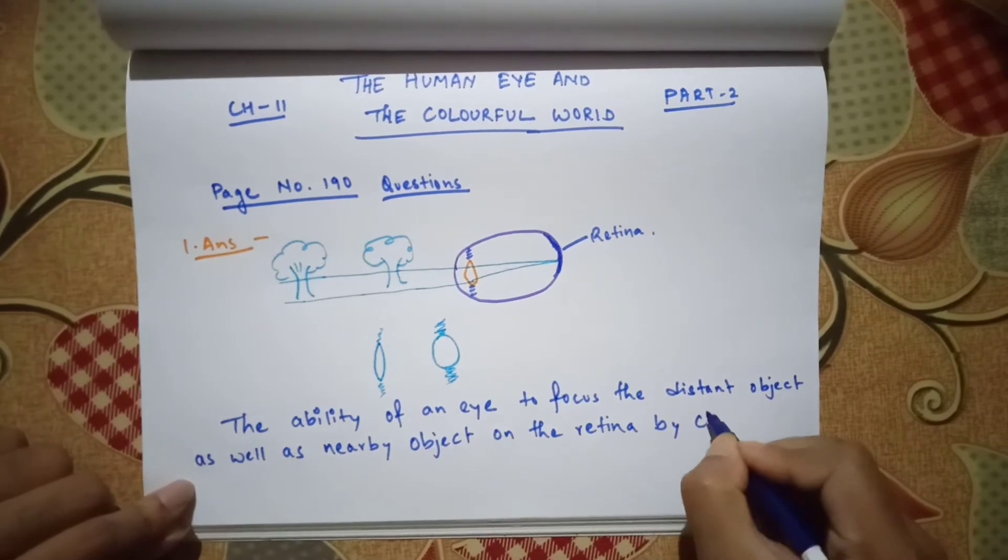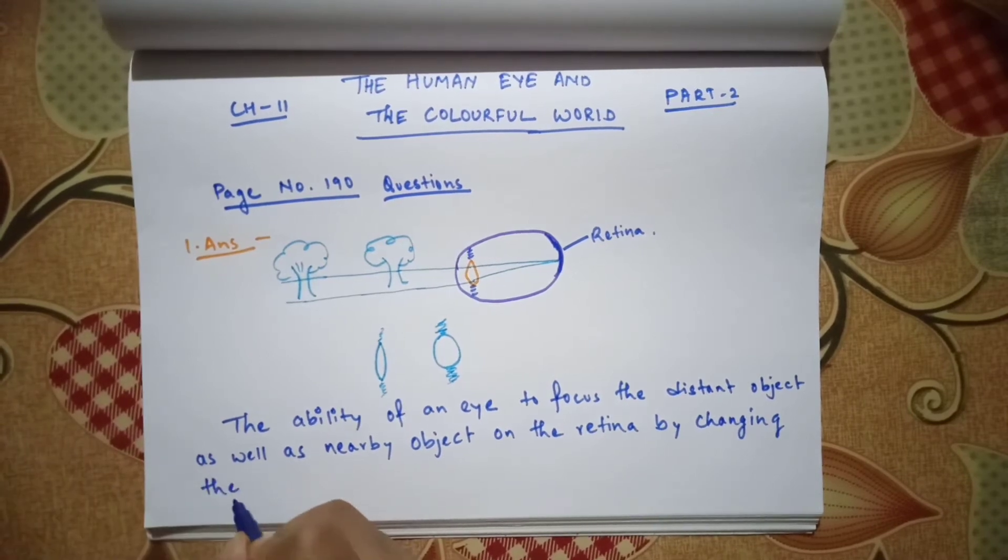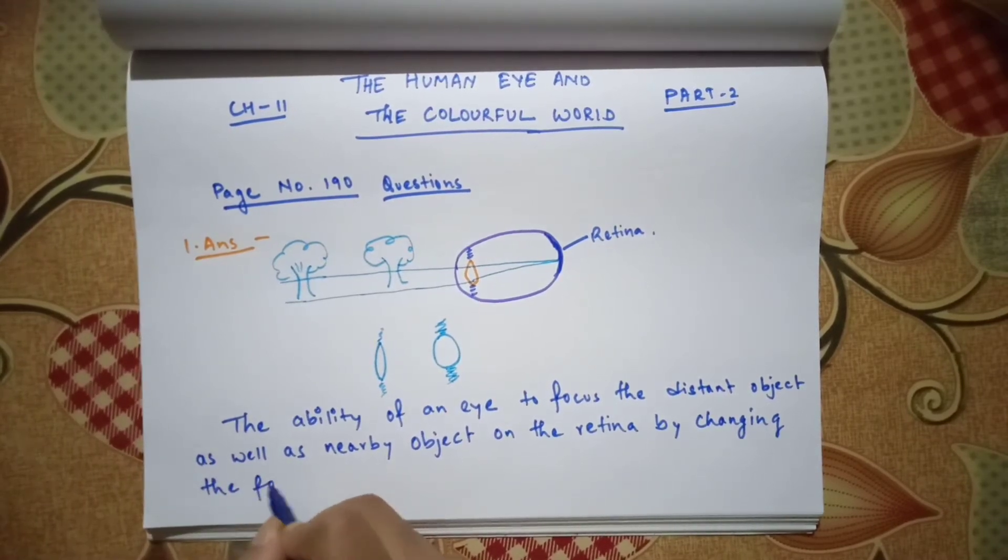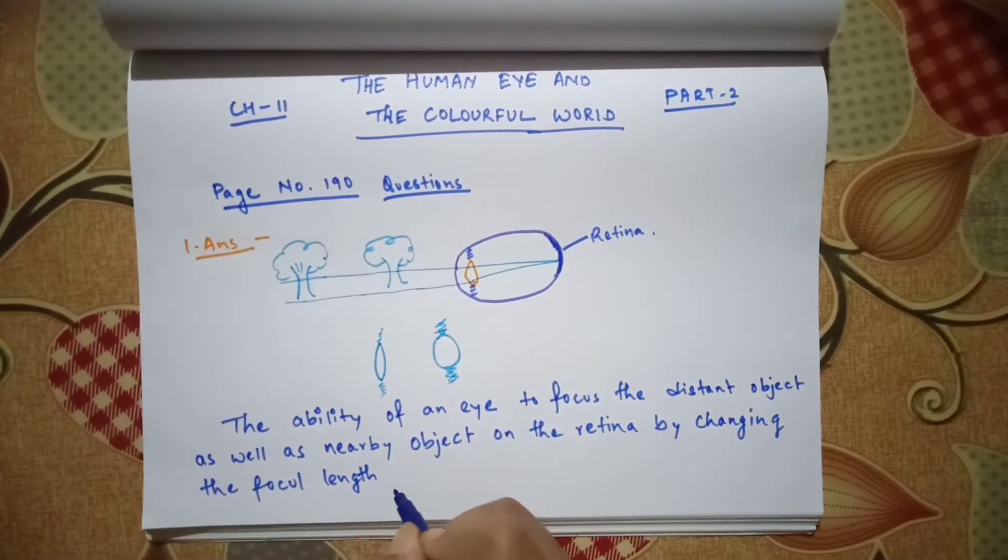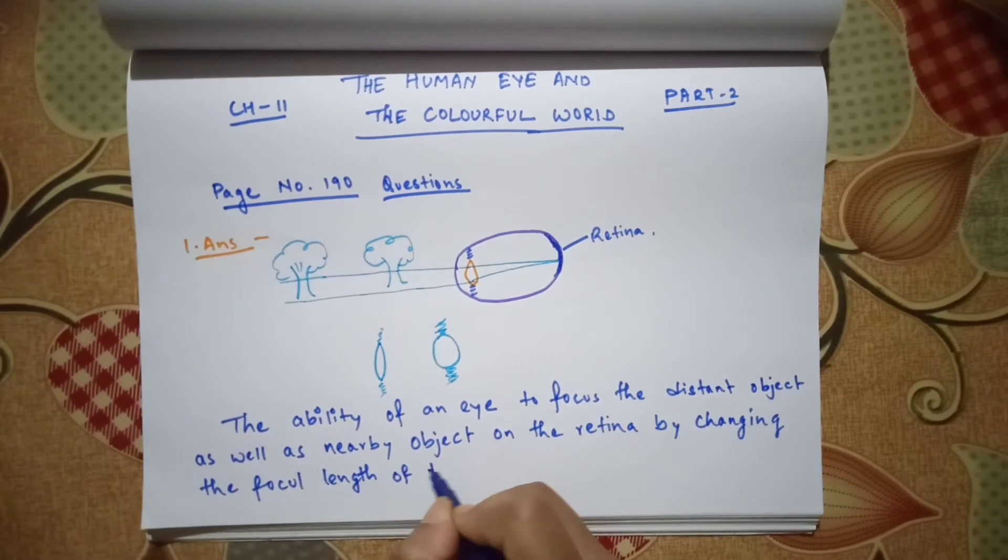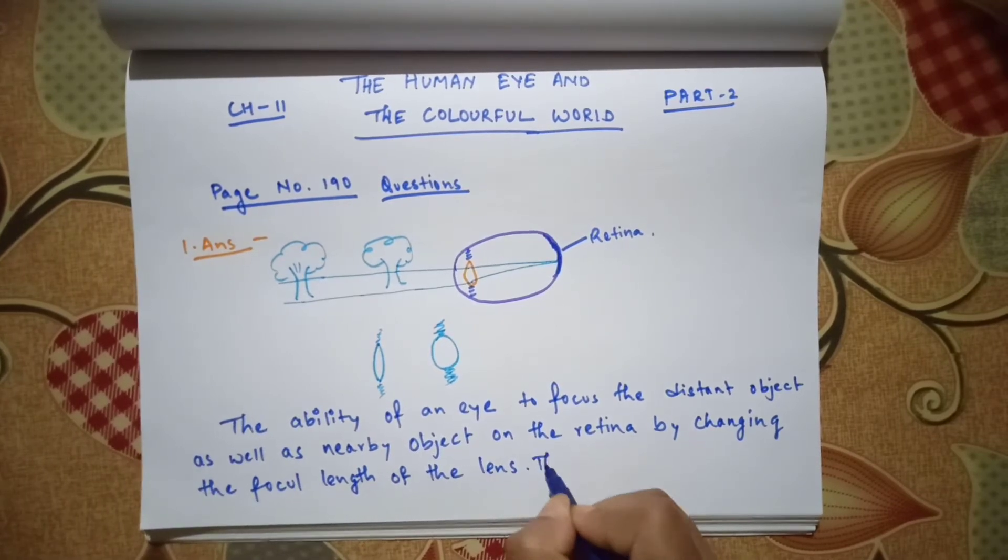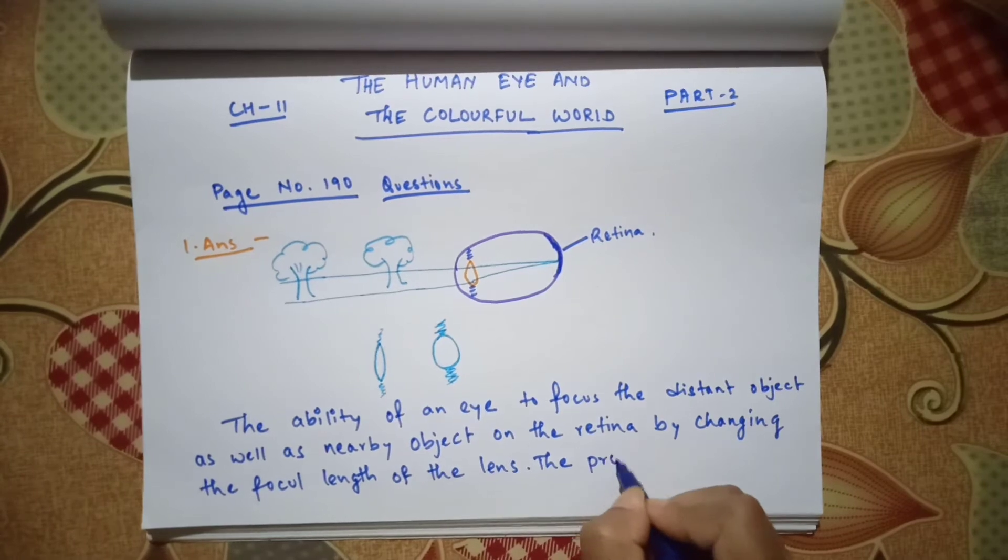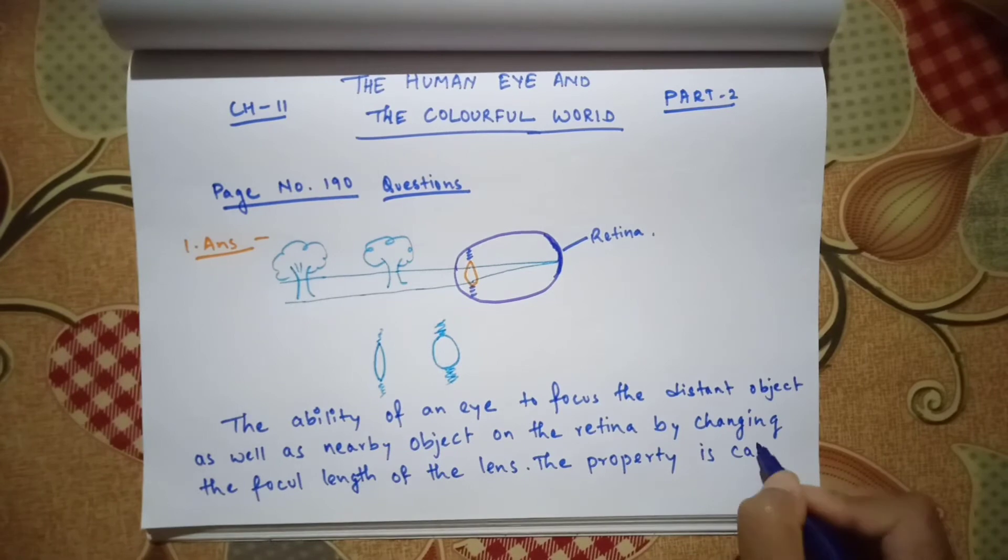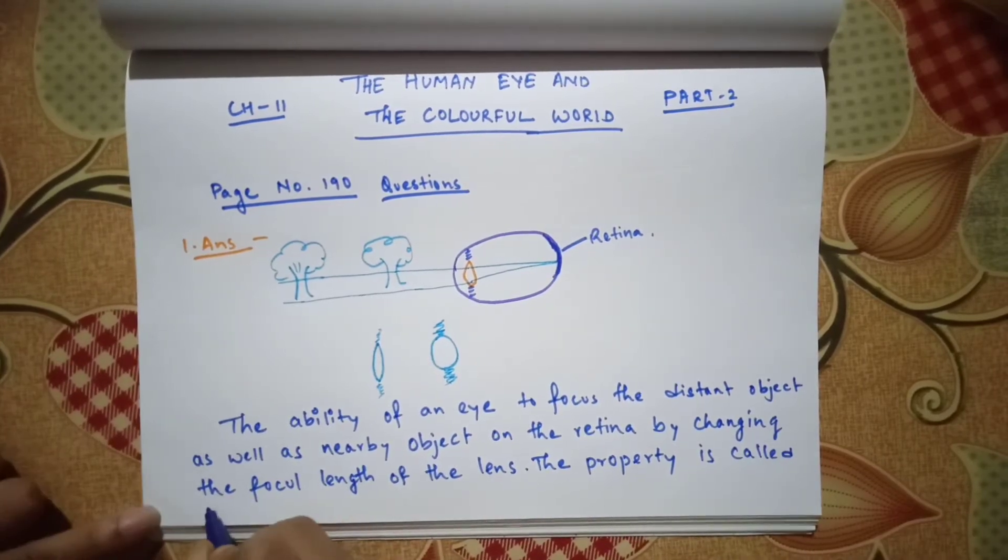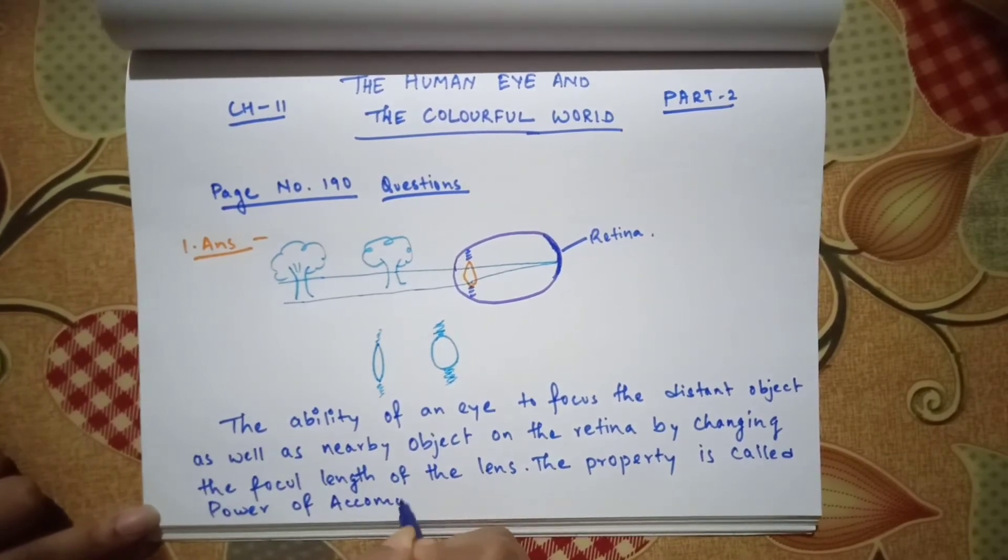By changing the focal length of the lens. Therefore, the property is called power of accommodation.